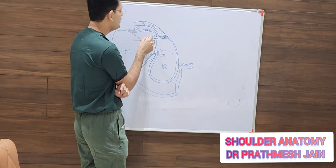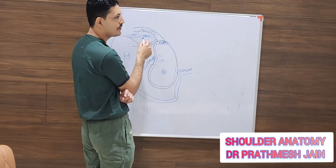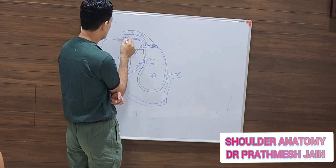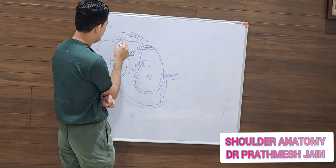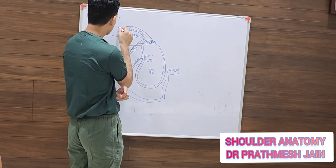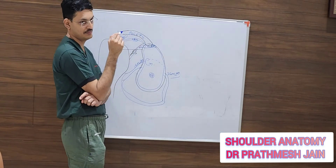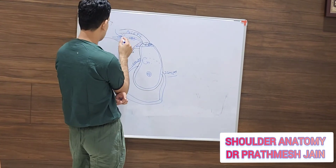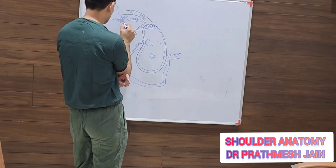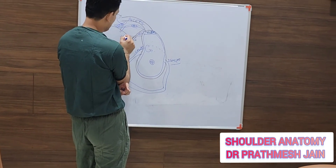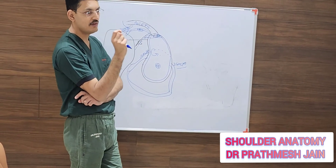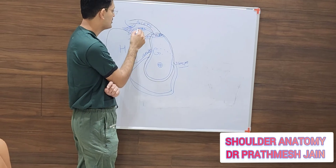Superior to the MGHL, you have the superior glenohumeral ligament (SGHL), and then the coracoid. A ligament goes from the coracoid to the humerus — the coracohumeral ligament (CHL). Both the CHL and the SGHL collectively form the medial sling of the biceps, attaching to the superior-most layer of the subscapularis. They have two main functions: they are the medial stabilizers of the biceps.